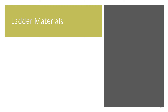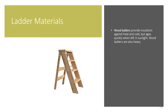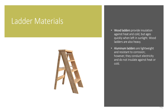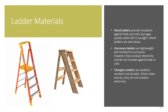When selecting a ladder, consider the material used in its construction. Common ladder materials include: wood, which provides insulation against heat and cold but ages quickly when left in sunlight — wooden ladders are also heavy; aluminum, which is lightweight and resistant to corrosion, however aluminum conducts electricity and does not insulate against heat or cold; and fiberglass, which is weather resistant and durable — when clean and dry, fiberglass ladders do not conduct electricity.